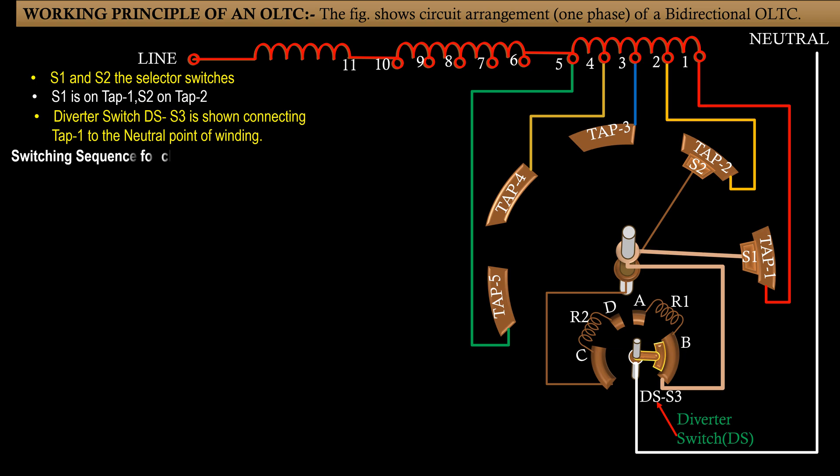Switching sequence for change over to tap 2 is as follows. Step 1: Contact A and B are closed, i.e. resistance R1 is inserted.